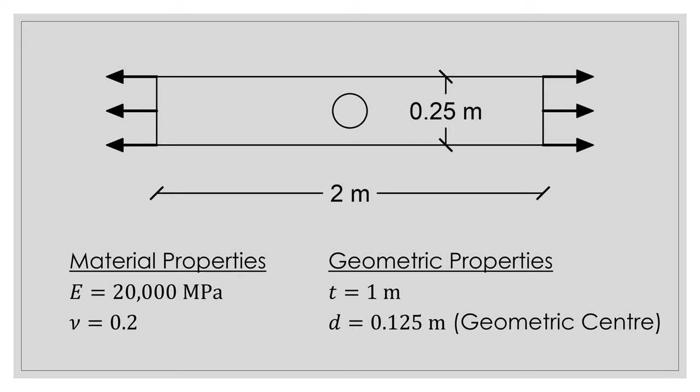So if we look at our model here, we simply have a plate and it's undergoing uniaxial tension in the horizontal direction. The material properties are simply elastic with a Young's modulus of 20,000 MPa and a Poisson's ratio of 0.2. Geometrically, the plate is 2 meters long and 0.25 meters in height with an in-plane thickness of 1 meter. At the center of this plate, we have a hole with a diameter of 0.125 meters, located at the geometric center of the plate.